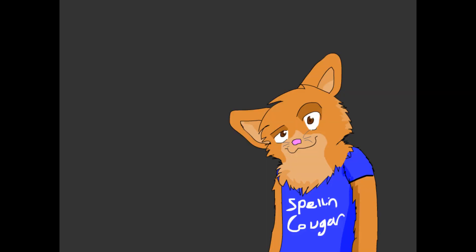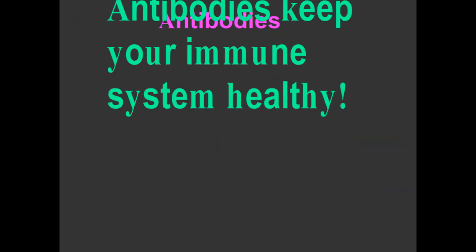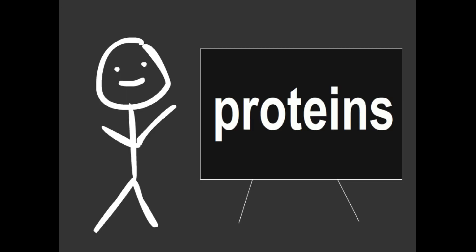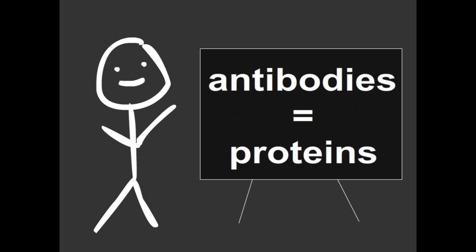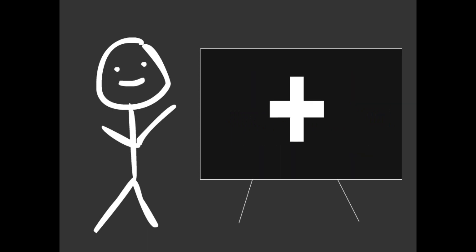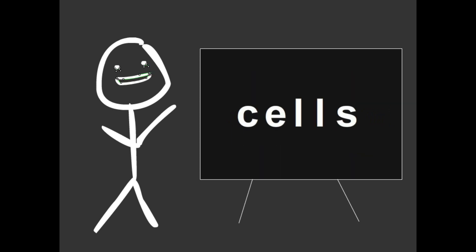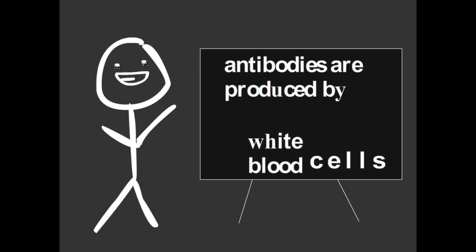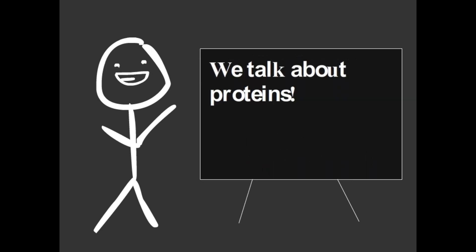You may be thinking to yourself, why is this important to you? Because antibodies are always scoping out and treating diseases, they keep your immune system active and healthy. Why is this important to our class? Well, we did learn about proteins, and antibodies are proteins. Plus, we learned a lot about cells, and antibodies are produced by white blood cells.